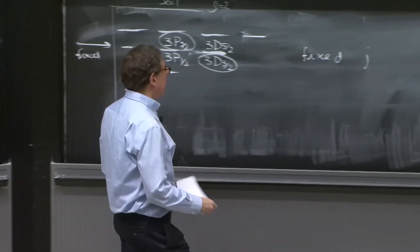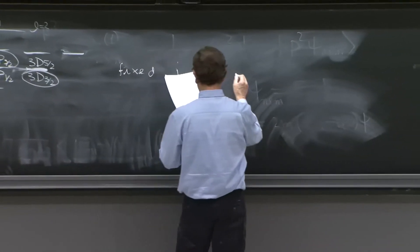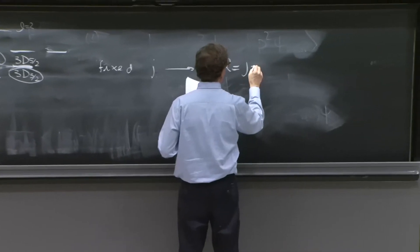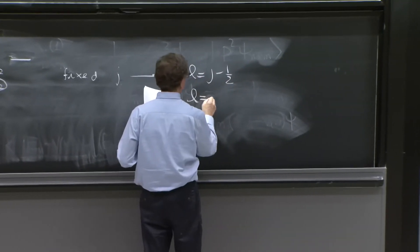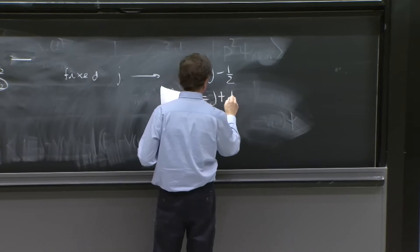So for a fixed j, it may be that l is equal to j minus 1 half or l is equal to j plus 1 half.